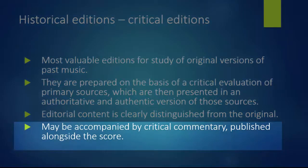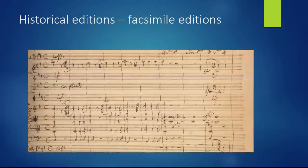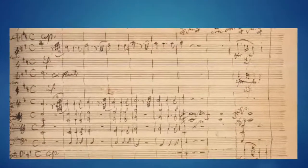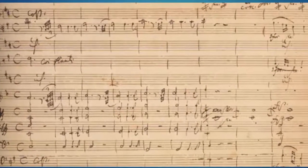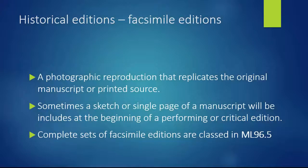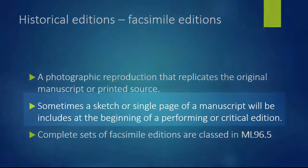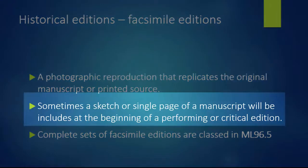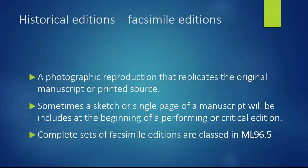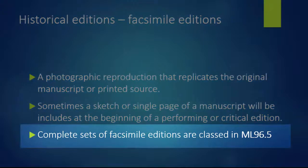Sometimes these editions will be accompanied by a critical commentary, which is published alongside the score. Facsimiles are photographic reproductions that replicate the original manuscript or printed source. They are used for study rather than performance. Sometimes a facsimile edition of a sketch or a single page of a manuscript will be included at the beginning of a performing or critical edition, although they can also appear in a series. Complete sets of facsimile editions are classed in ML 96.5.